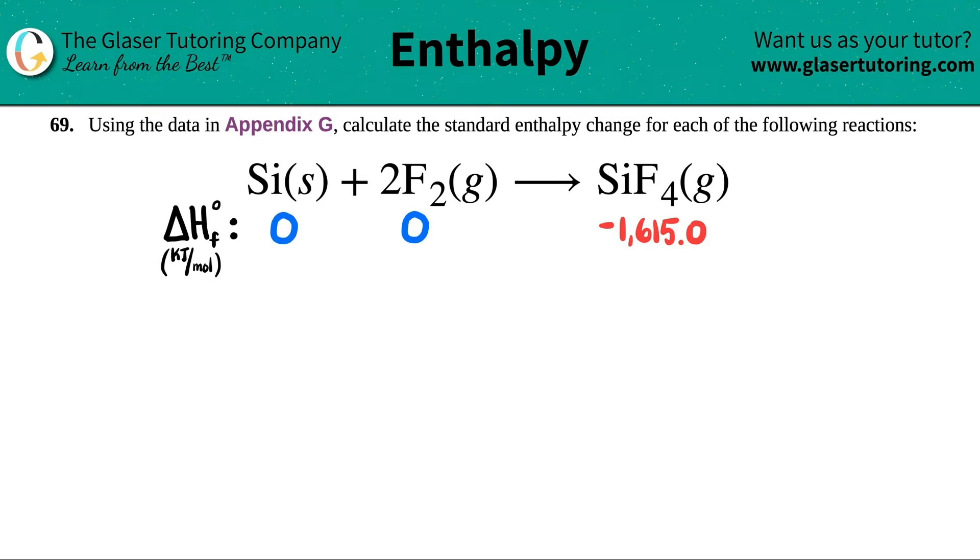Number 69. Using the data in Appendix G, calculate the standard enthalpy change for each of the following reactions. We have silicon solid plus two F2 gas, so fluorine gas, will yield SiF4, which is a gas.